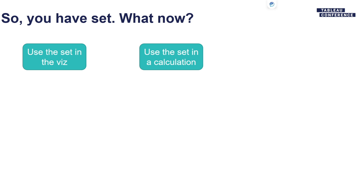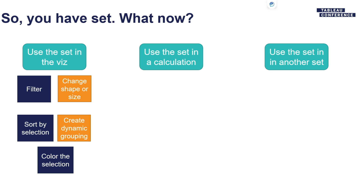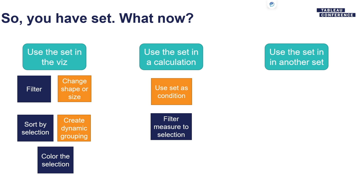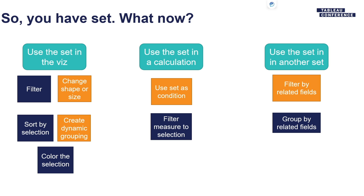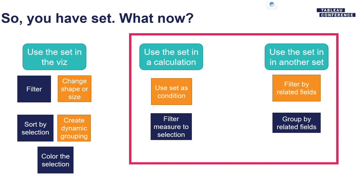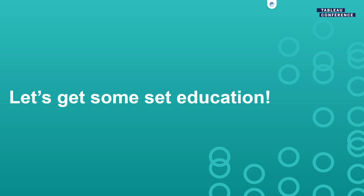There are more or less three ways to use sets. You can use the set in the viz directly — color, sort, using in rows or columns. You can use the set in a calculation. And you can even use a set inside another set. For our session today, we're mostly going to focus on using sets in calculations, as there was another more intermediate session showing how to use the set in the viz.